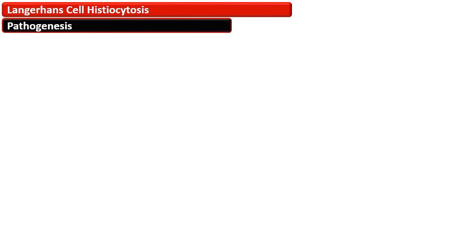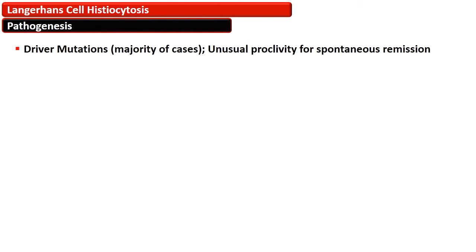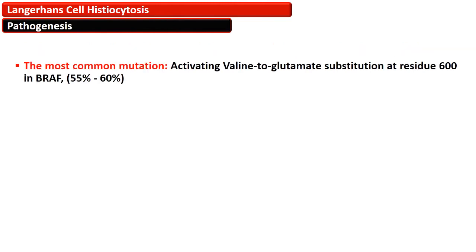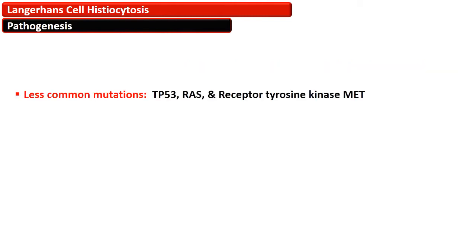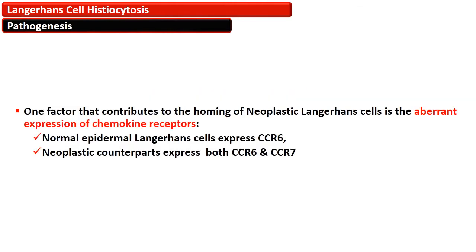The pathogenesis of Langerhans cell histiocytosis was always considered controversial, but it is now considered that most cases are associated with driver mutations. The most common mutation is in BRAF, present in about 55 to 60% of cases — an activating valine to glutamate substitution at residue 600. Less common mutations are in TP53, RAS, and receptor tyrosine kinase MET.